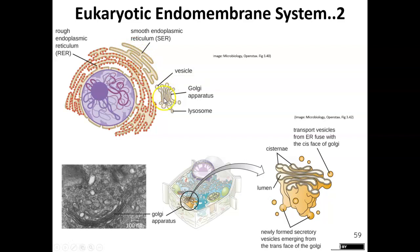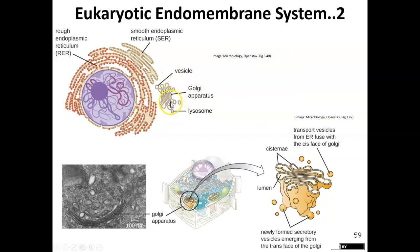Materials produced in the ER can move to the Golgi, be packaged and modified further, and then sent out to different areas of the cell or released from the cell. The Golgi is kind of like the post office — or the shipping center — of the cell for a eukaryote, where you package everything up and ship it out.